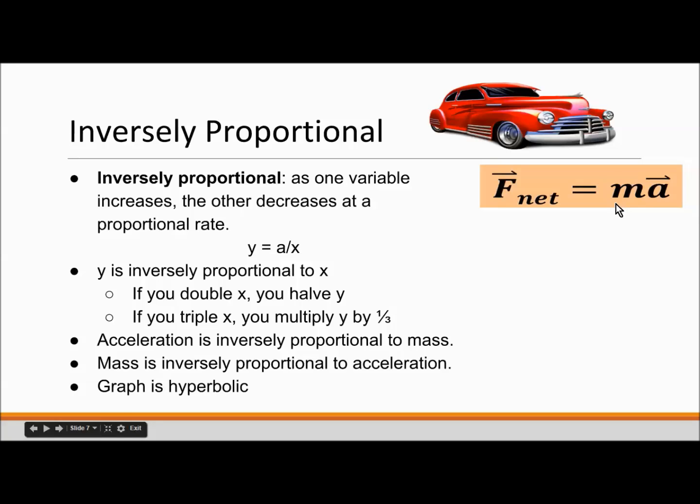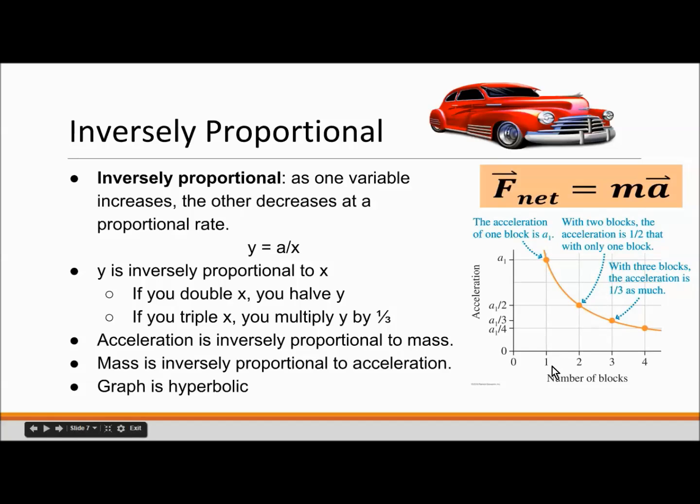On a graph, an inversely proportional relationship would look hyperbolic. So here's an example. As you increase the number of blocks, you increase the mass. So two blocks is twice the mass of one block. If we had an acceleration for one block of a1, we increase the mass to be 2. Our acceleration is now a1 over 2. And as you continue plotting points, you create a hyperbola.